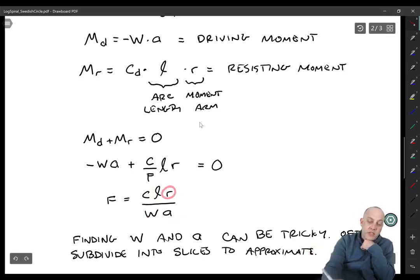So all you have to do now is compute that arc length, test out a particular circle with the radius and a center, then you compute the arc length, you compute the weight of that sliding mass and the centroid to it, and then you can directly calculate the factor of safety.